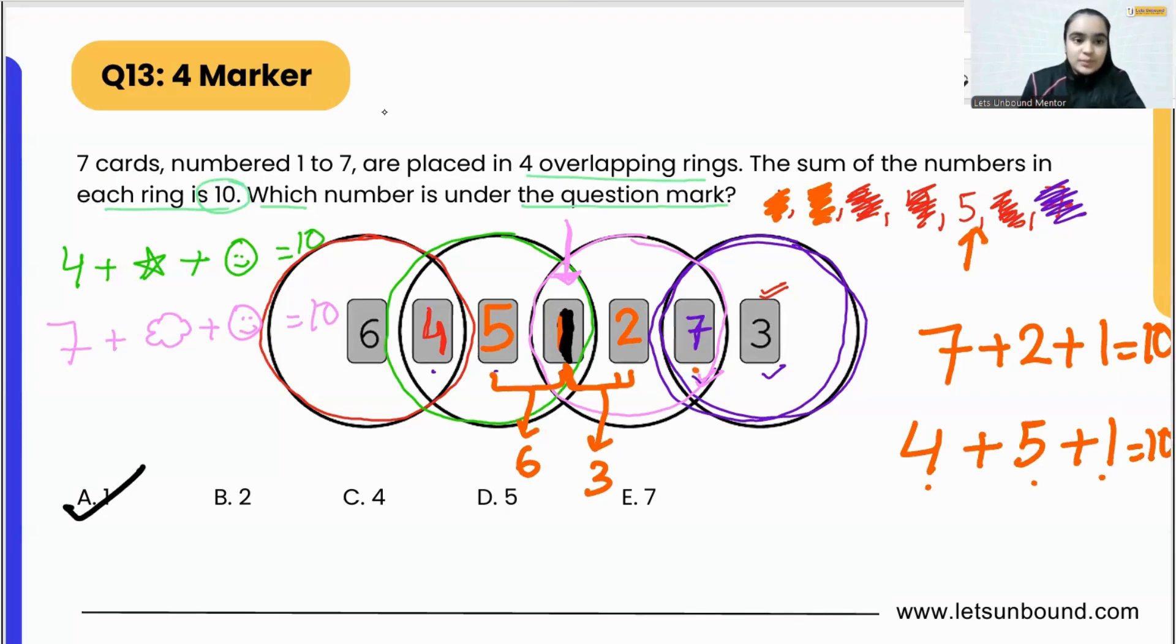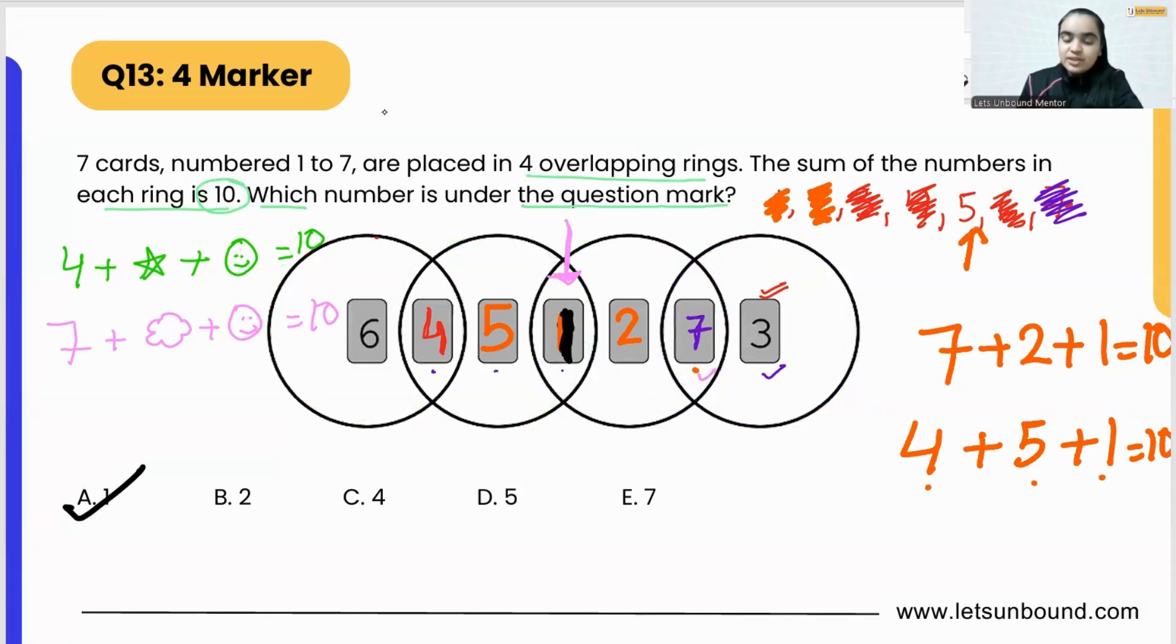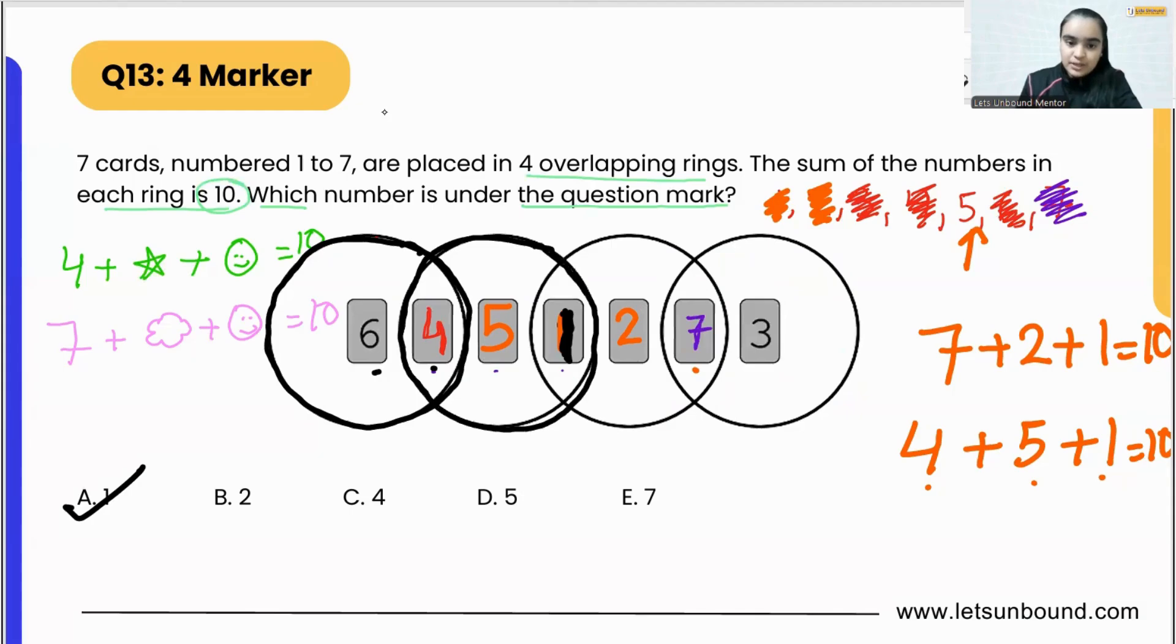You can check as well. What numbers have we written? Each ring should add up to 10. If we check the very first ring, 6 plus 4 is 10. If we check the second ring, 4 plus 5 is 9, 9 plus 1 is 10. That is also correct. If we check the third ring, 1 plus 2 is 3, 3 plus 7 is 10. That is also correct. And the last ring is 7 plus 3 which is 10. So that means we are correct and our answer is 1.